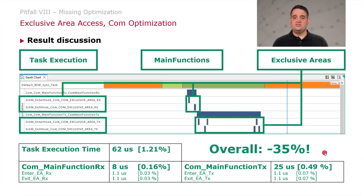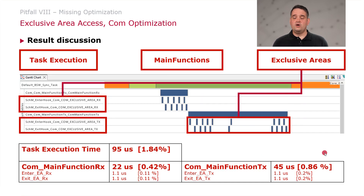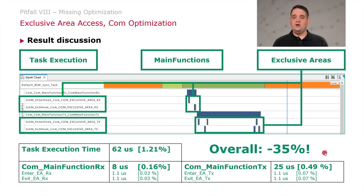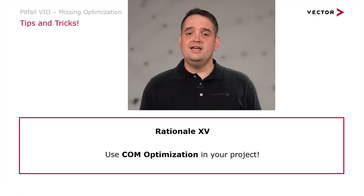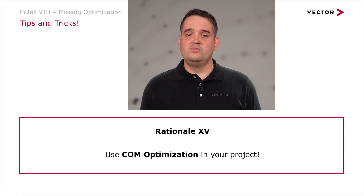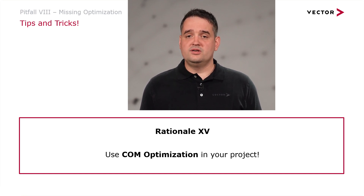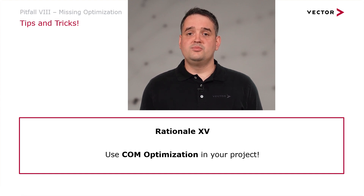Here again you see the comparison before and after — the system has fewer interrupt locks. This brings me to my final tip, rationale number 15: use the COM optimization container in your project. It's there to be used — play around with the number of ISR locks. By default we use the value 8, but please consider whether it fits the context of your project.